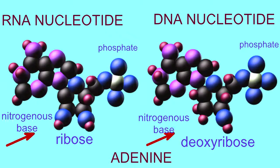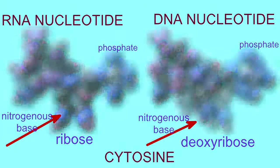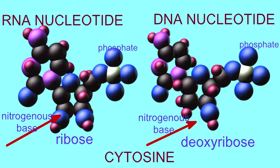The RNA nucleotide possesses the sugar ribose with an oxygen attached to carbon number 2, while deoxyribose lacks this oxygen on carbon number 2. RNA and DNA cytosine nucleotides are identical in their phosphate groups.